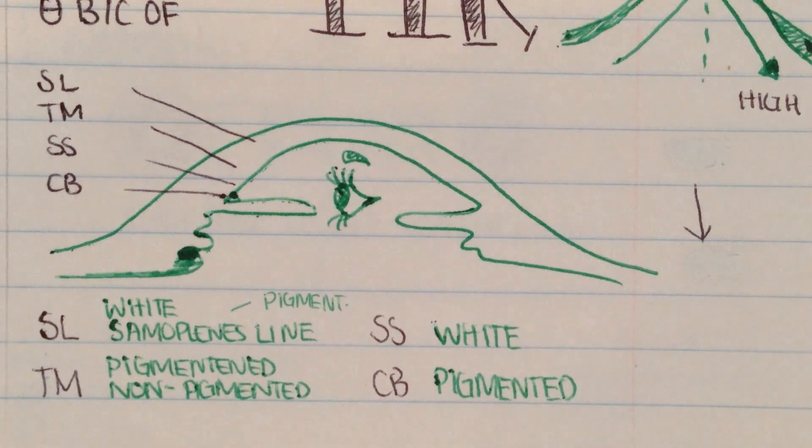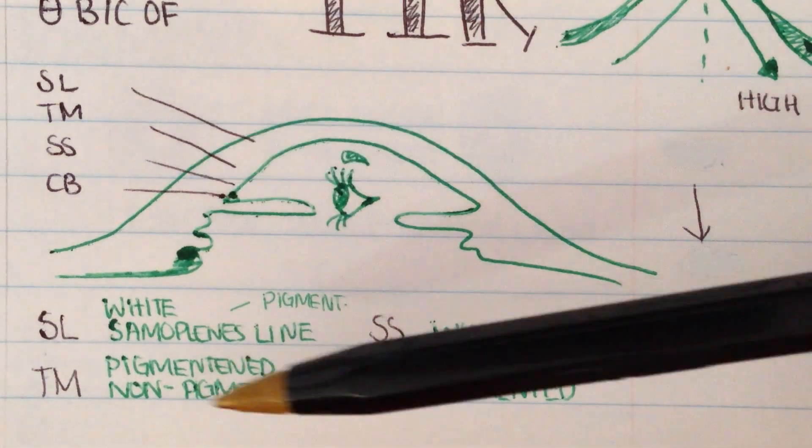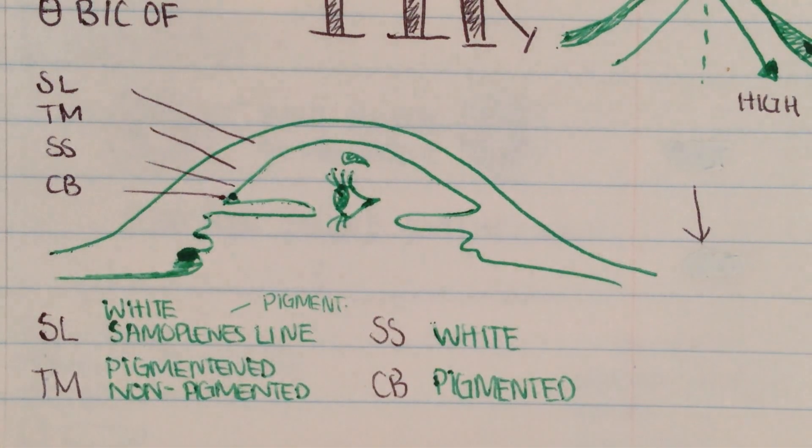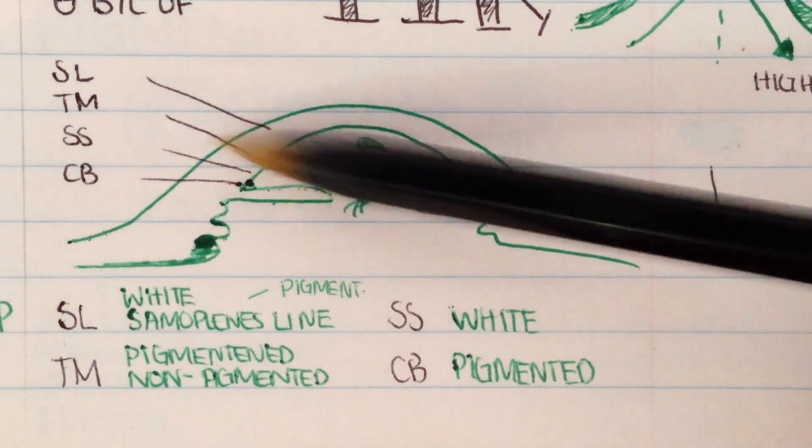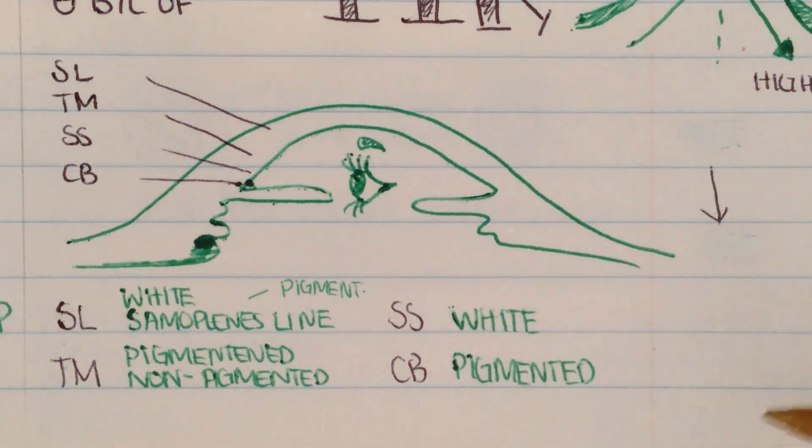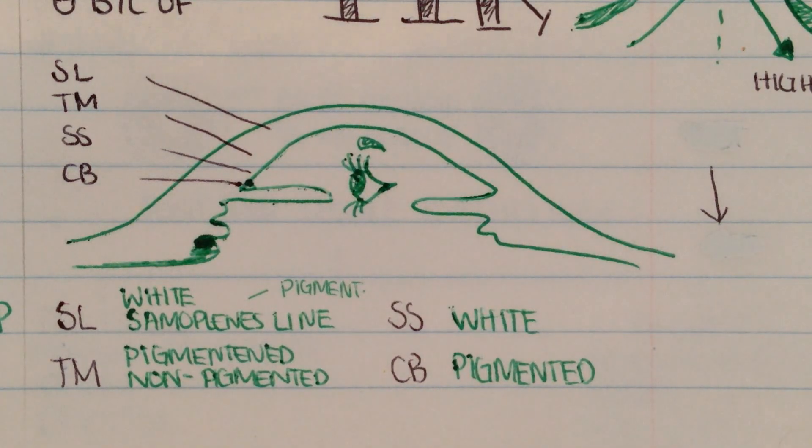The first thing that we're going to work, we're going to work anterior to posterior. The first one that we have here is Schwalbe's line, which is usually seen as a white line. When it's pigmented, it's known as Sampaolesi's line. Then you've got the trabecular meshwork, which has a pigmented and non-pigmented portion, and that's where our aqueous drains out from. You've also then got your scleral spur, which is seen as a white structure in the angle, and finally you've got the ciliary body, which is nice and heavily pigmented.